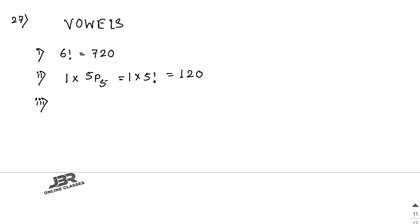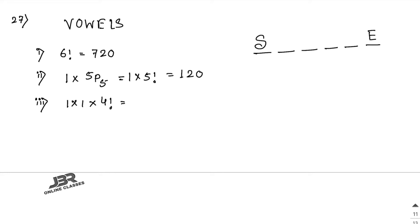Number three: each word begins with S and ends with E. Total 6 places. First place is always S, last place is always E — so 1 × 1 for those. The 4 remaining places have 4 remaining letters, so that gives 4P4 = 4! = 24.